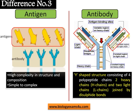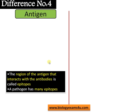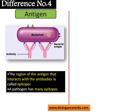The variable region determines the specificity of an antibody. Difference number four — the region of the antigen that interacts with the antibodies is called an epitope. A pathogen has many epitopes. Suppose this is a bacterium: it has many epitopes or antigenic determinants that can interact specifically with different antibodies. Each epitope is recognized by a specifically directed antibody, and a different antibody is produced by the system against each distinct epitope.